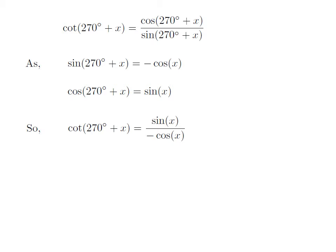Let us apply the above identities in the above expression of cot 270 degree plus x. So cot 270 degree plus x is equal to sine of x divided by minus cosine of x.